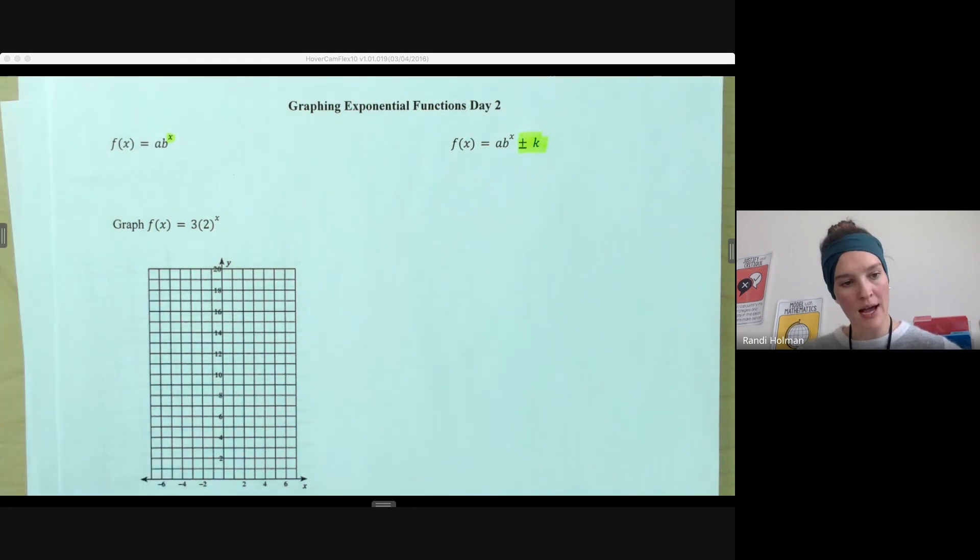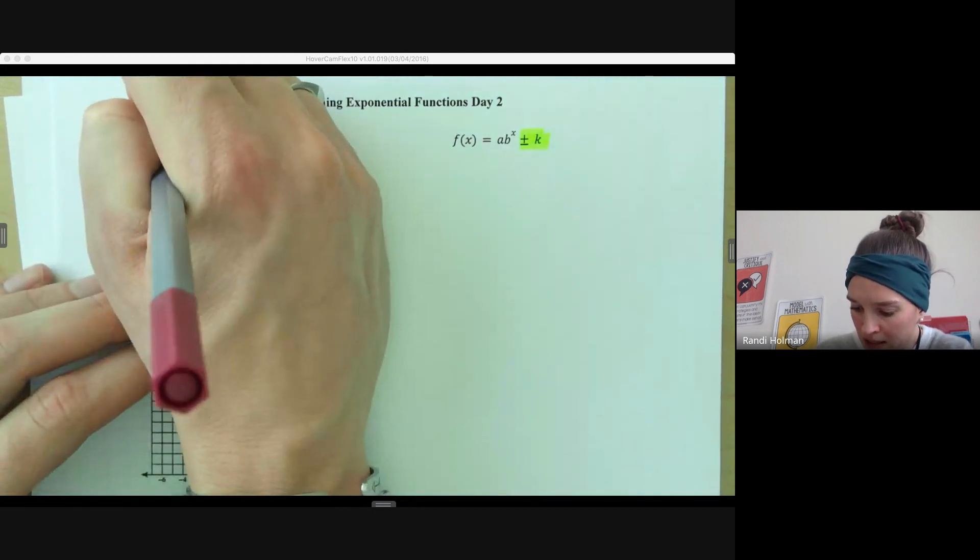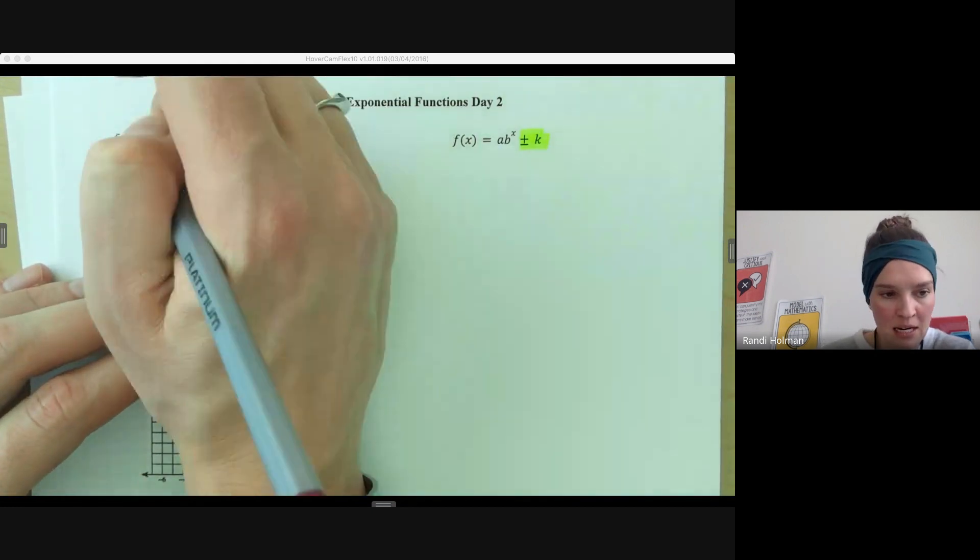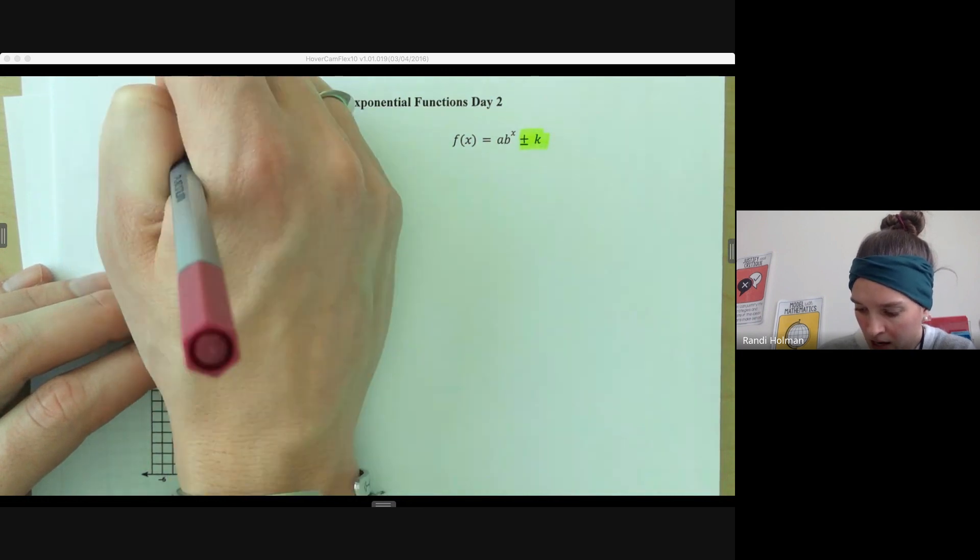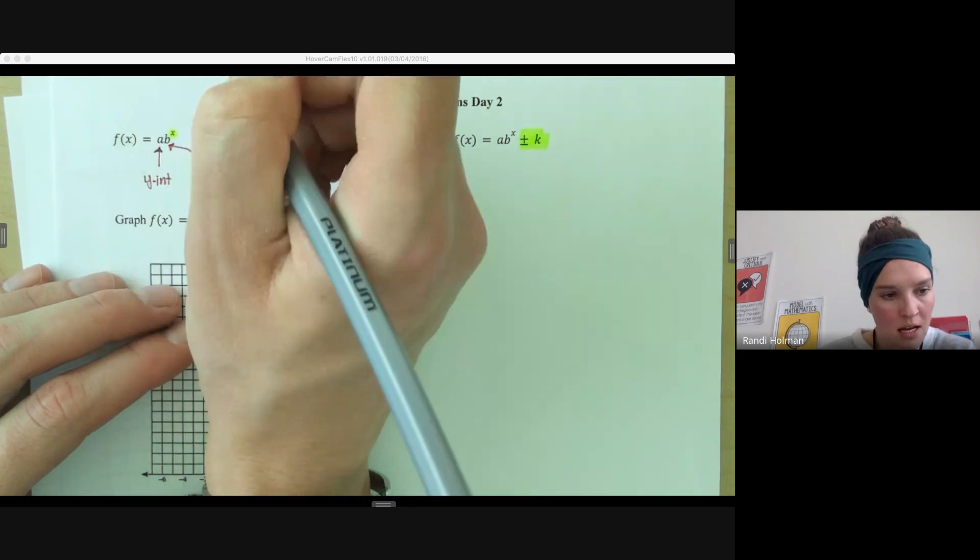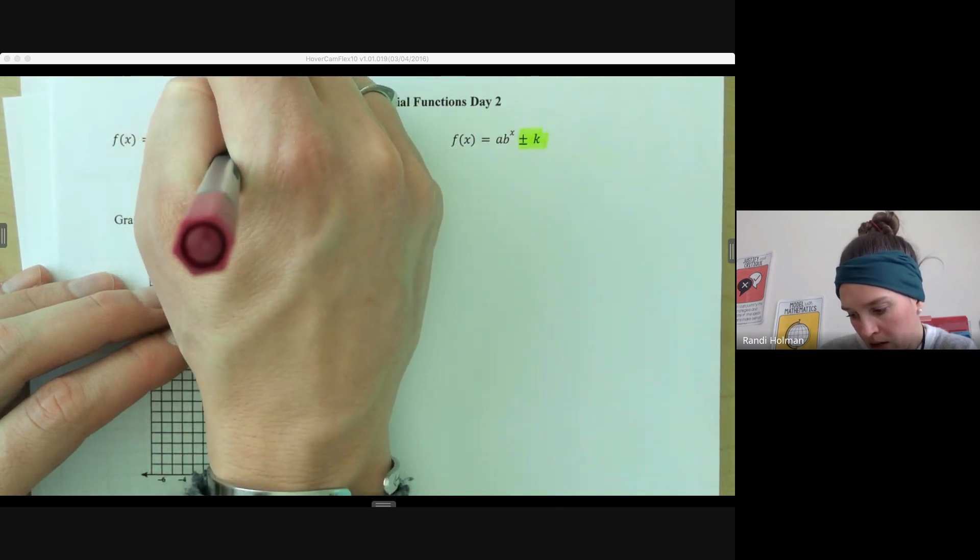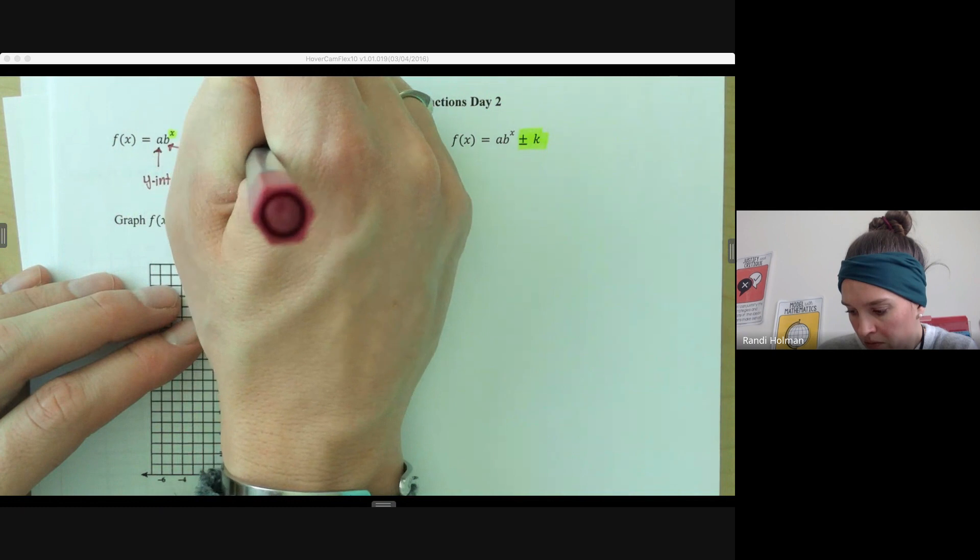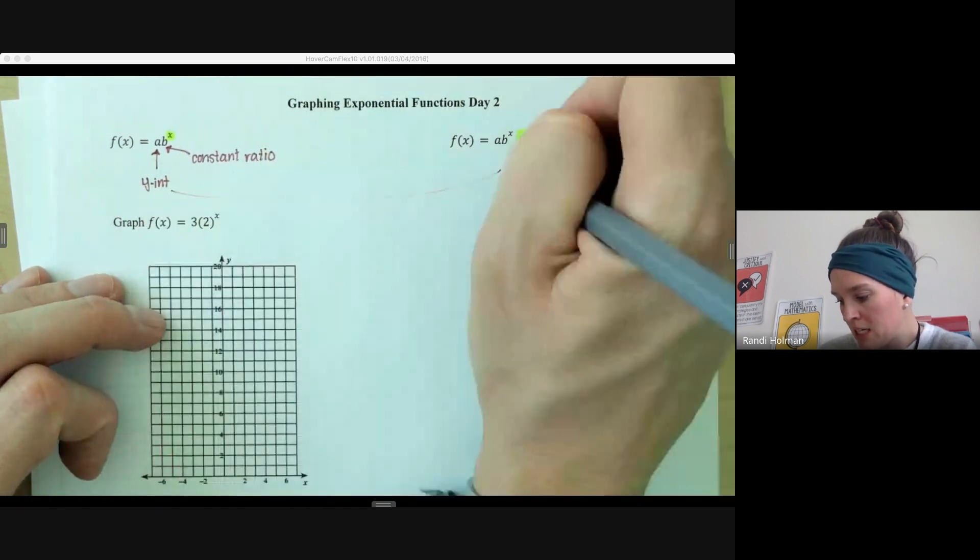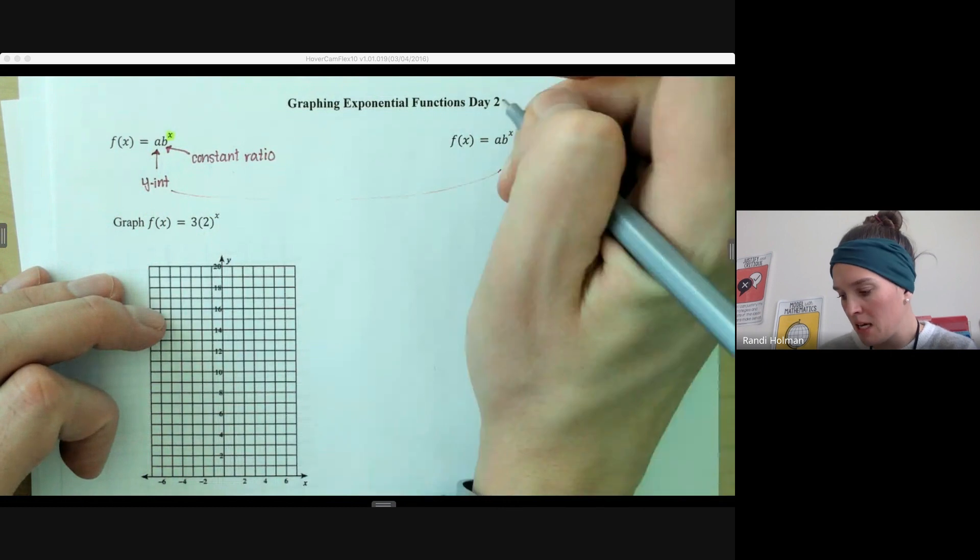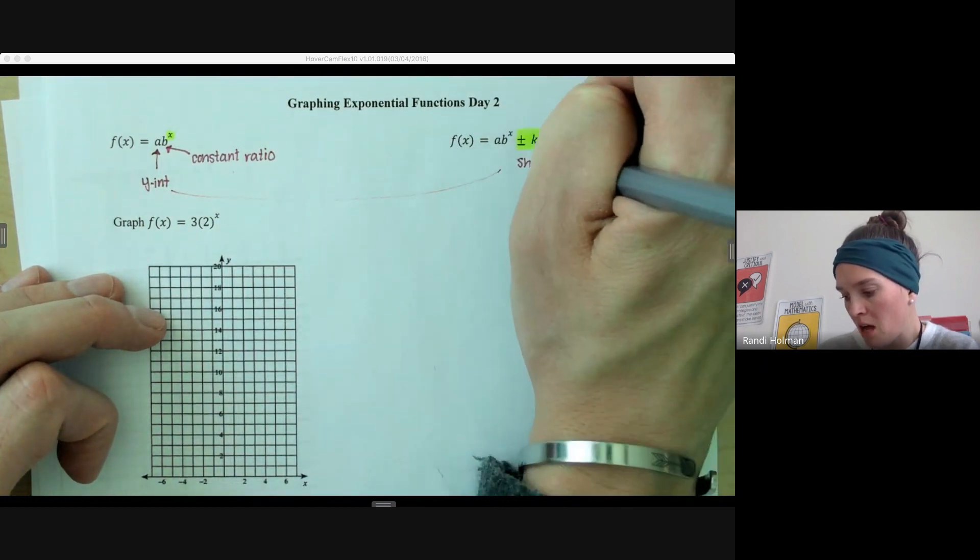So let's take a look at some of these pieces. Keeping in mind that this a value here is going to be our y-intercept. And this b value here is our constant ratio, what we're multiplying by. And that y-intercept here will be affected if we have this plus or minus something, because that is going to shift us up or down.